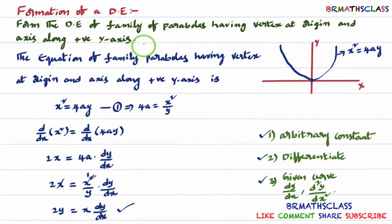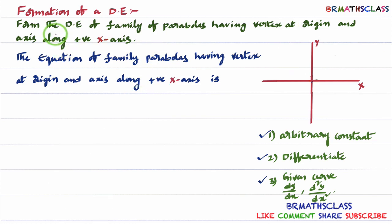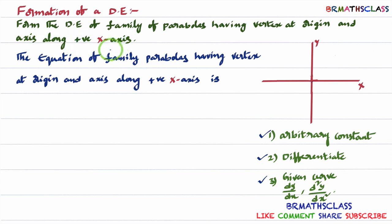Now we will do one more problem of the same type. I request you to pause this video and try that problem on your own. This is a similar question to the previous one: form the differential equation of family of parabolas having vertex at origin and axis along positive x-axis. The only difference here is that the axis is along positive x-axis.